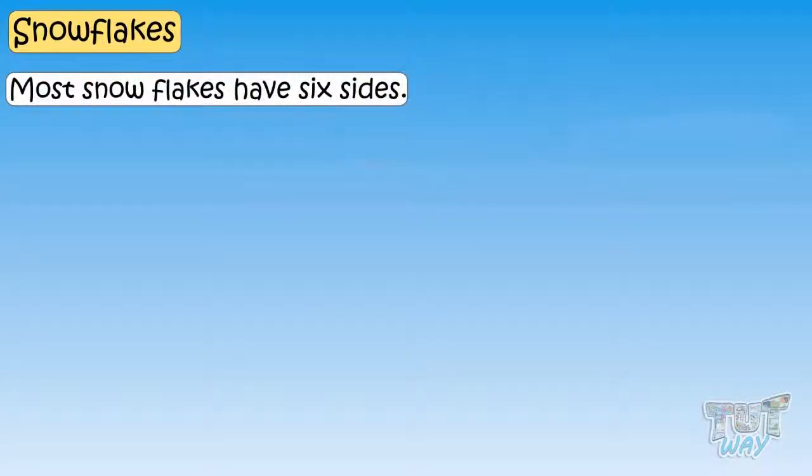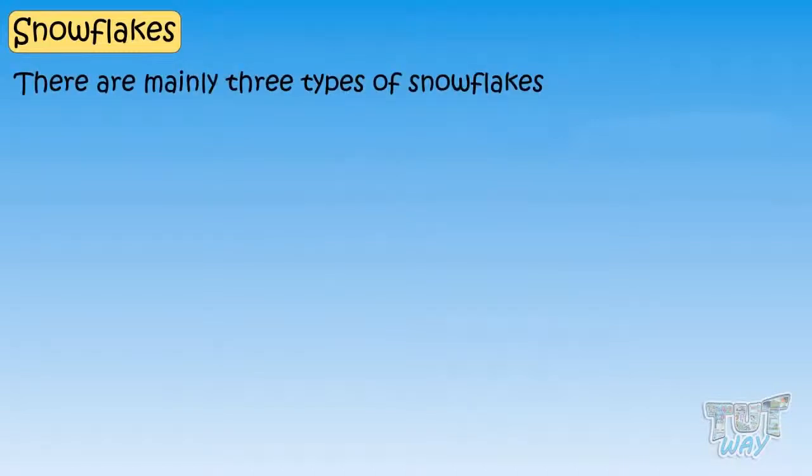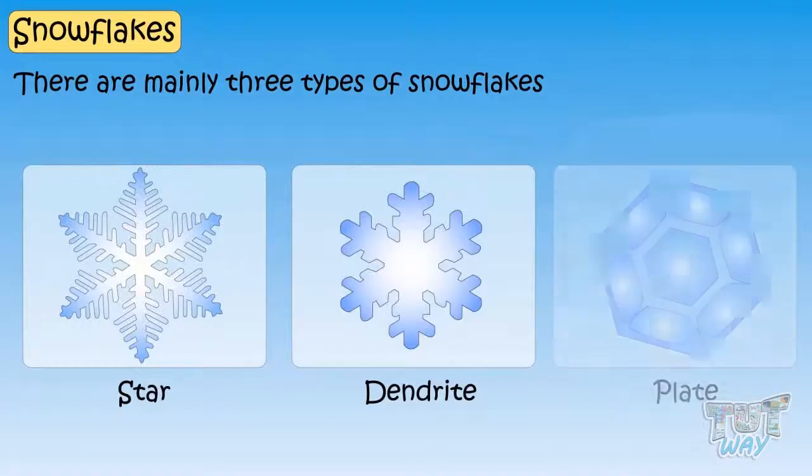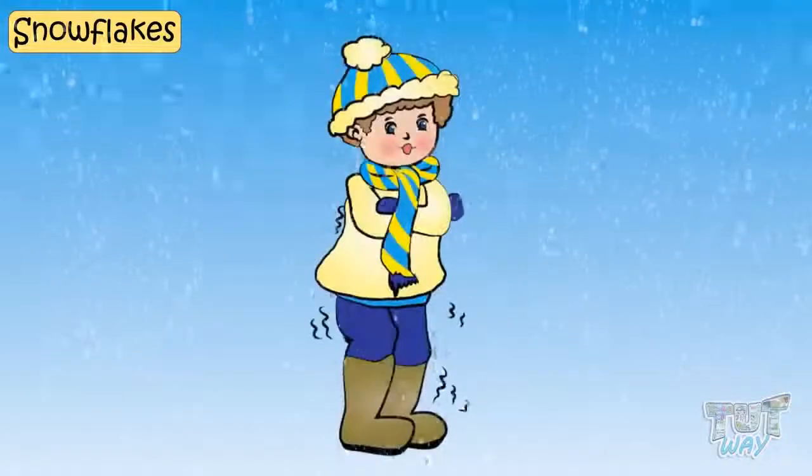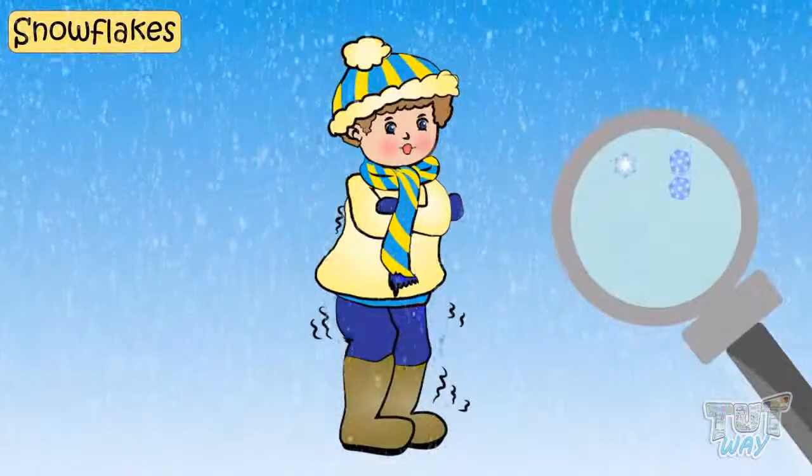Most snowflakes have six sides. There are mainly three types of snowflakes known as star, dendrite, and plate. Next time you see fluffy snowflakes drifting down from the sky, don't forget to take a closer look at them.